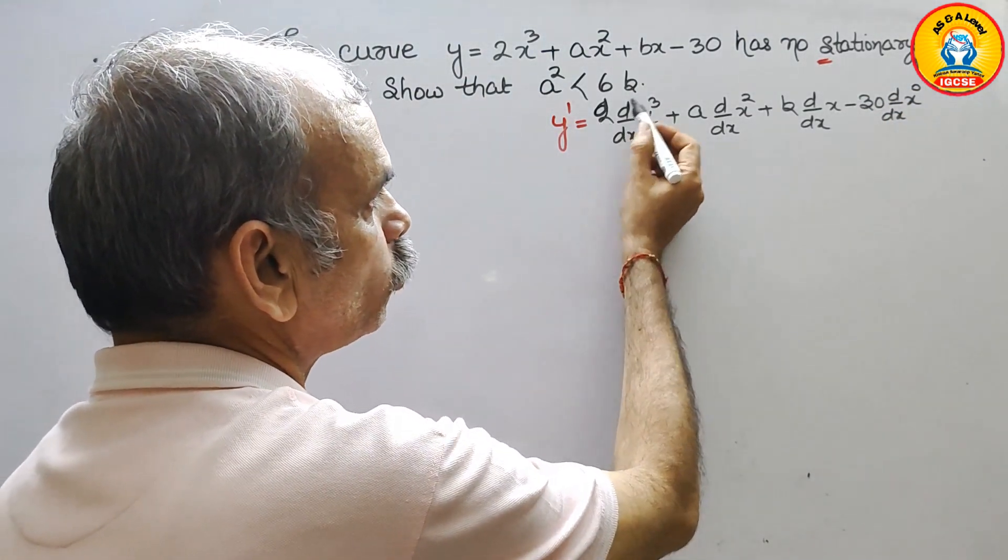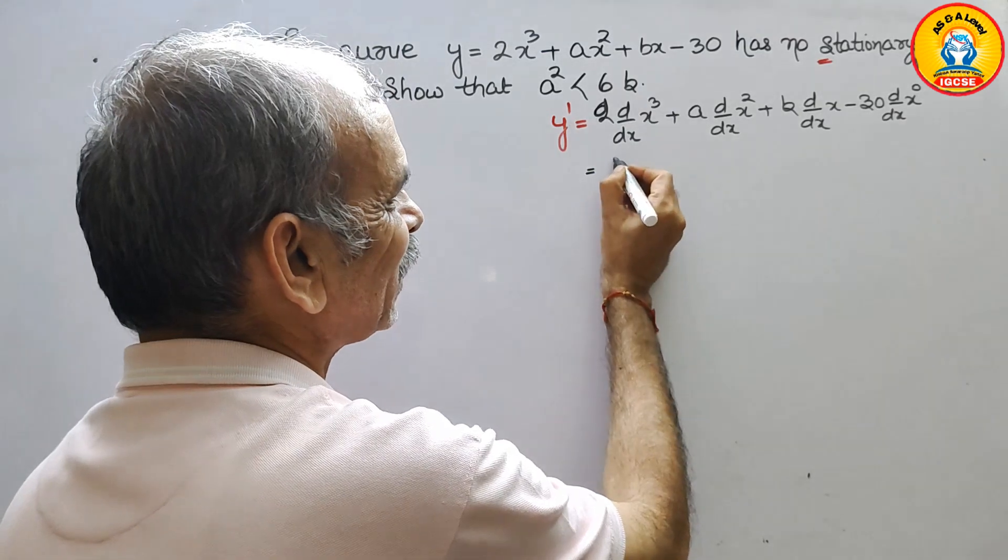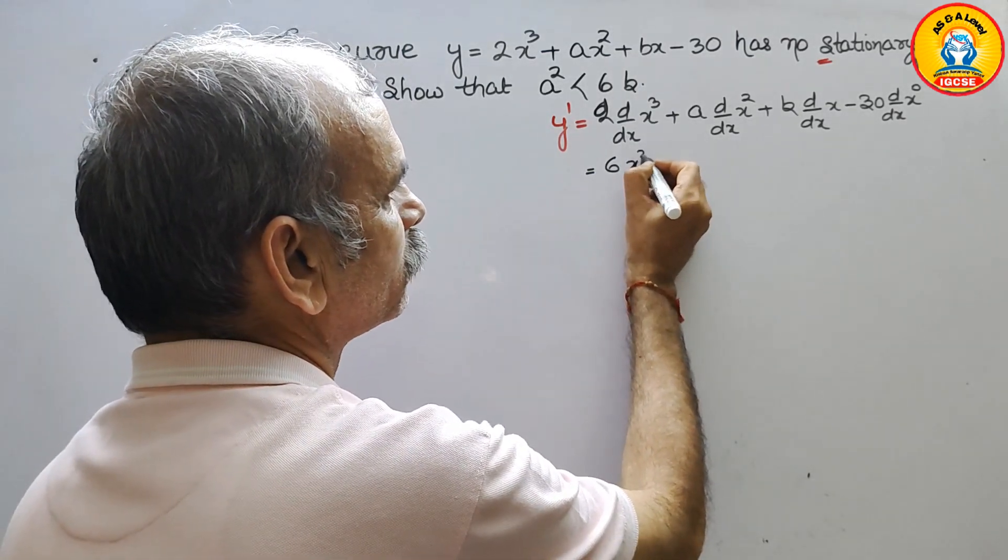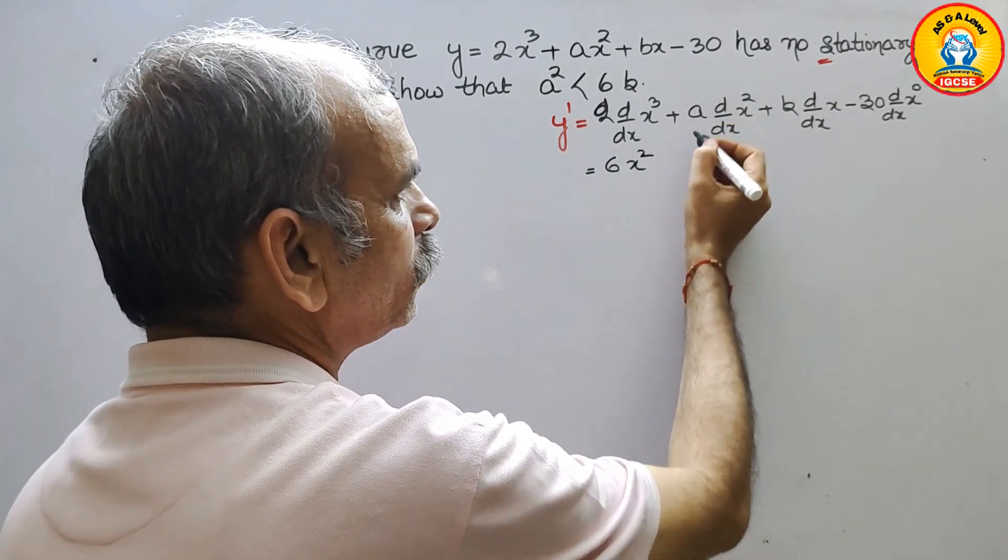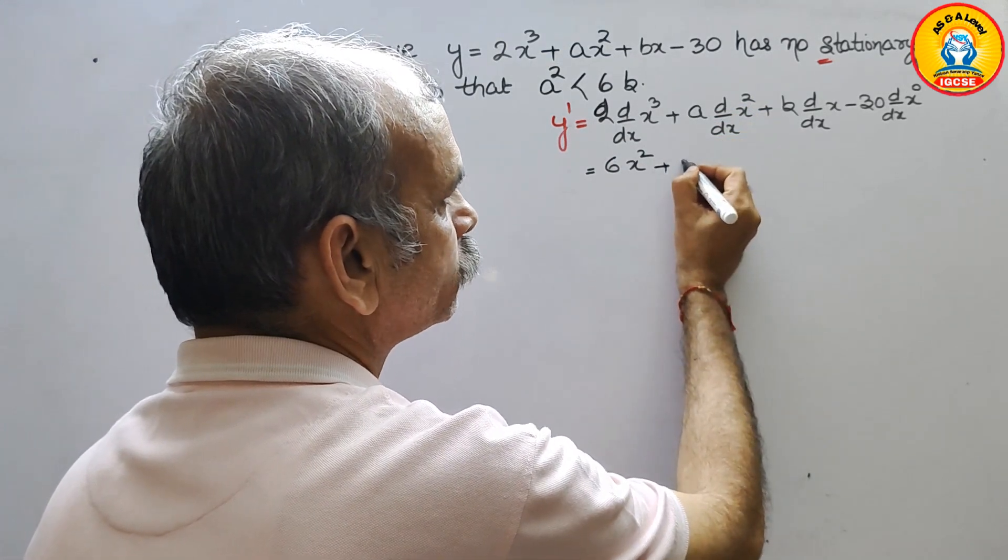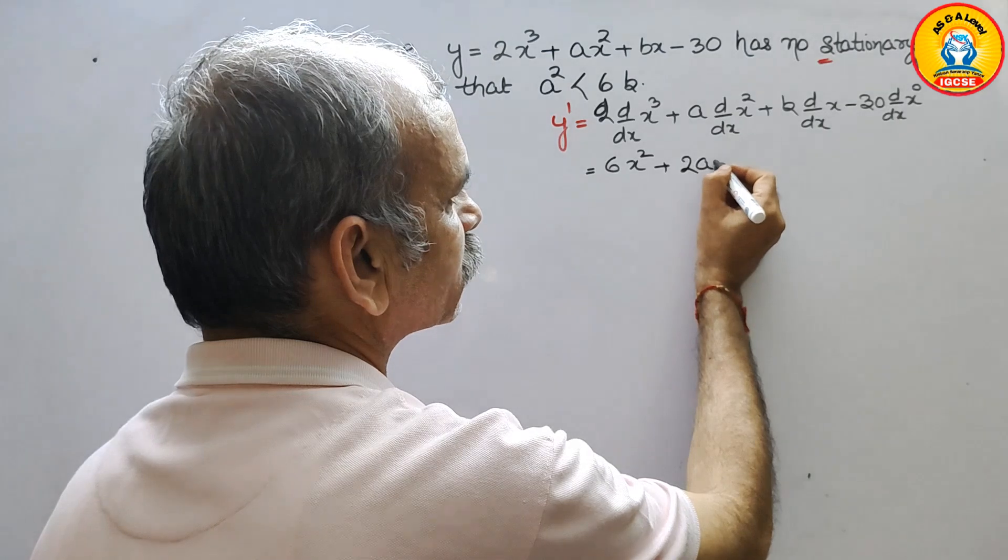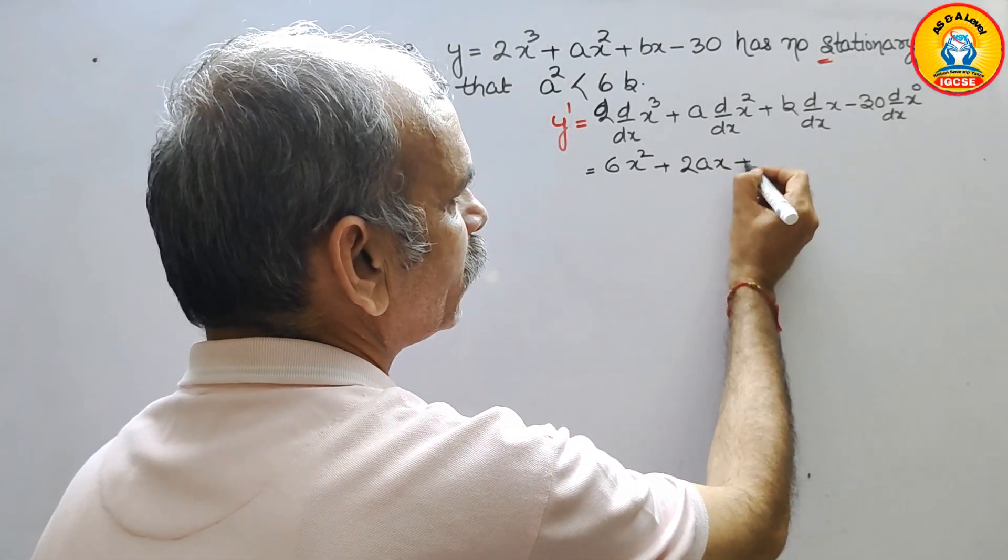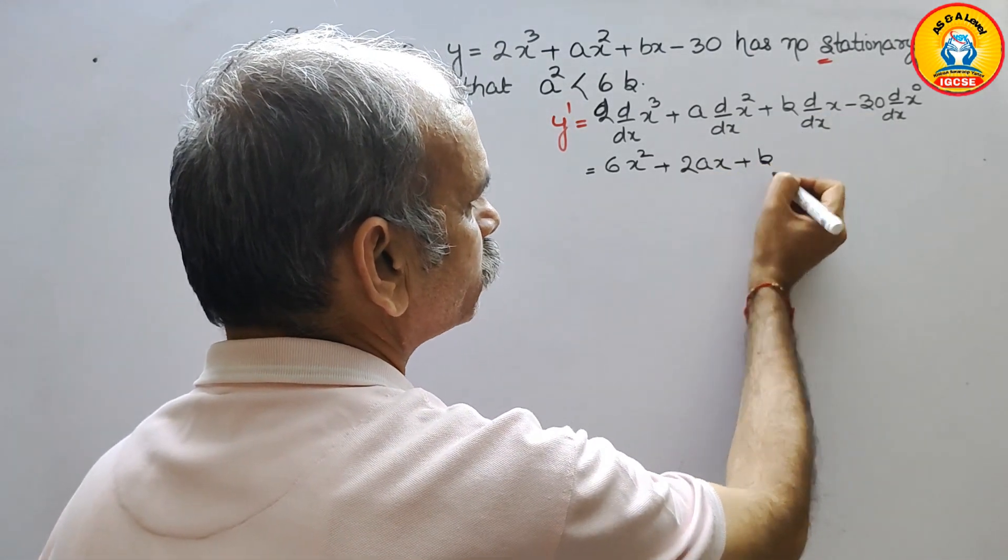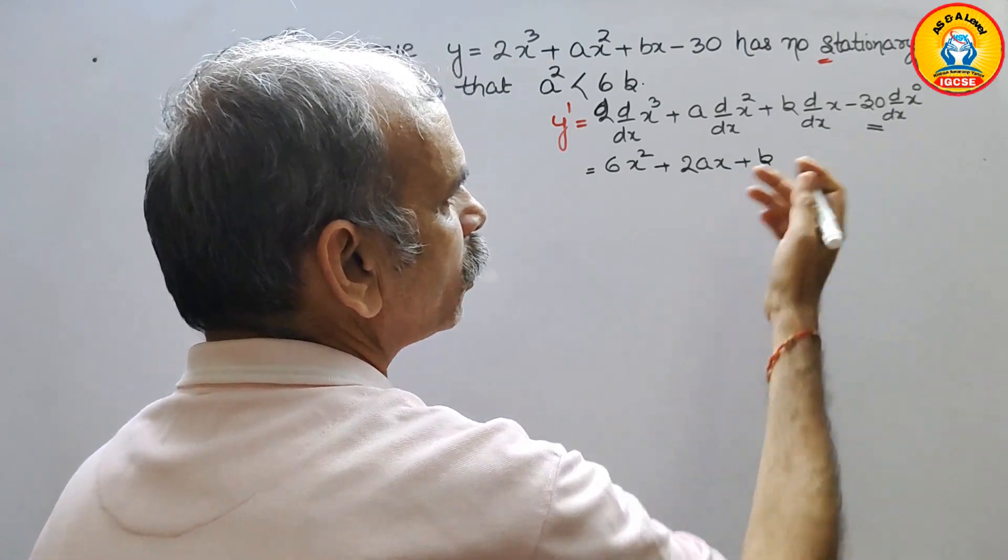Now solve this. 2 into 3 is 6x². Next is plus 2ax plus b and this will be 0.